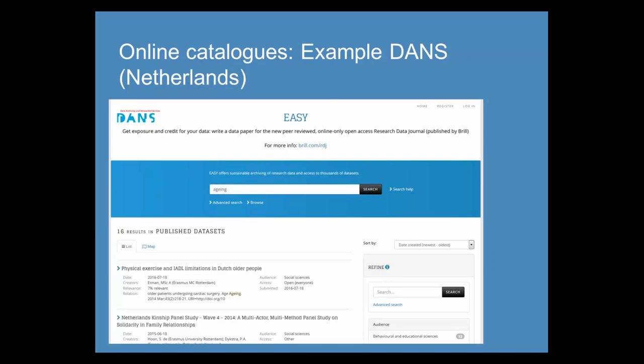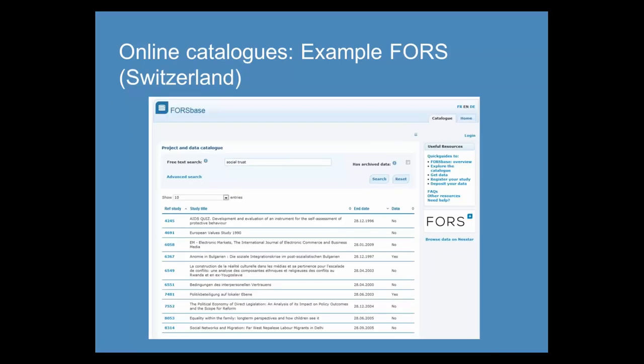National data services have websites with online catalogues for searching and browsing. The example shown here is the catalogue for DANS in the Netherlands, which allows you to search using terms such as 'ageing'. Searching large archives can be demanding — you can get many results — but the tools generally offer ways to sort and refine results, for example by date. Language can be an issue, though websites and catalogues are often in multiple languages including English. Sometimes data and documentation may only be available in one language, and it can be useful to consider alternative spellings of key search terms.